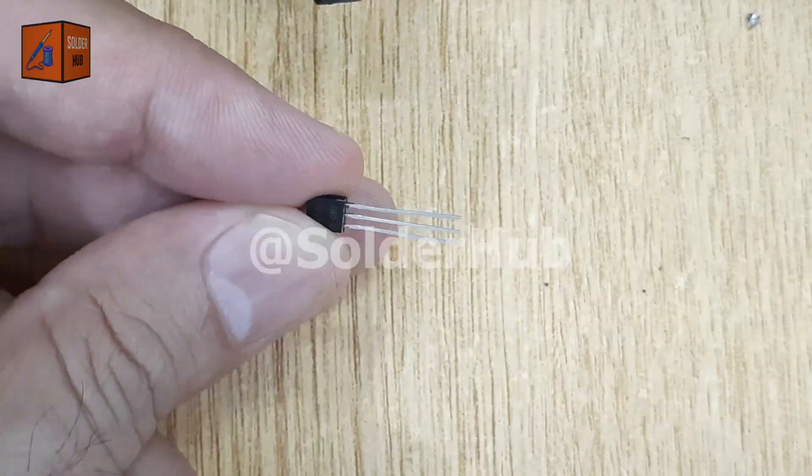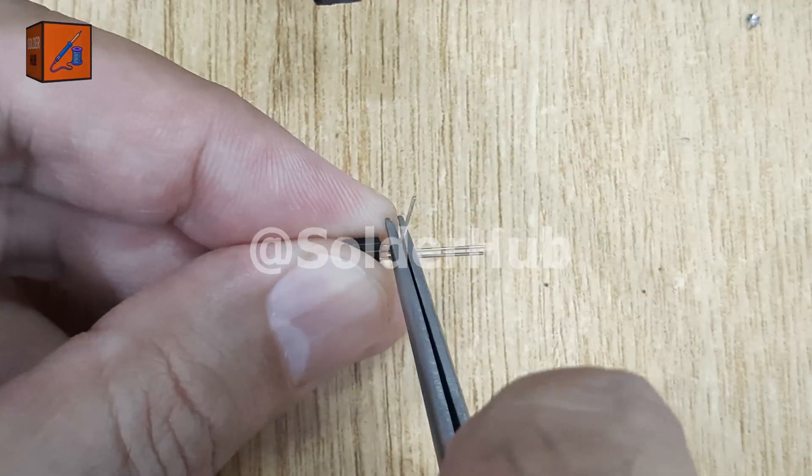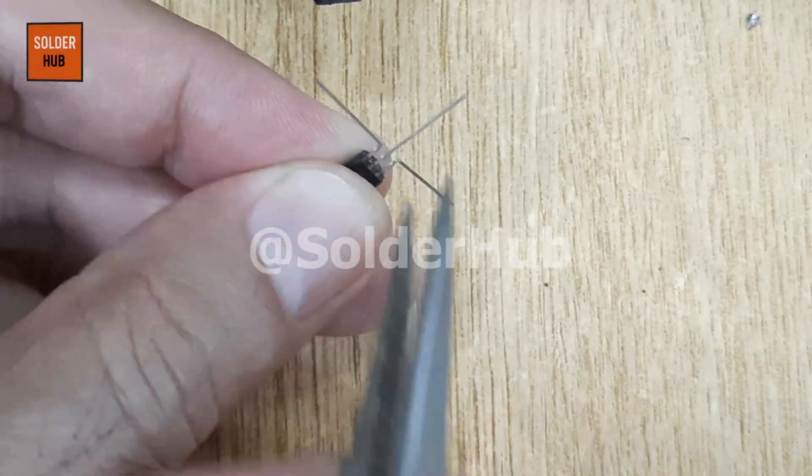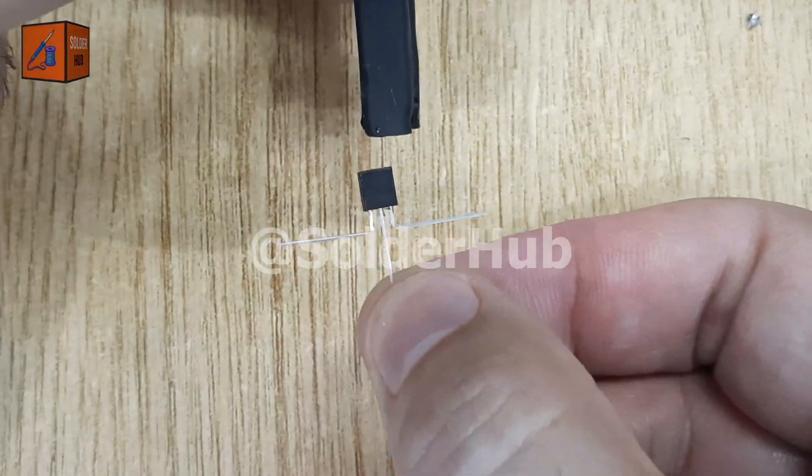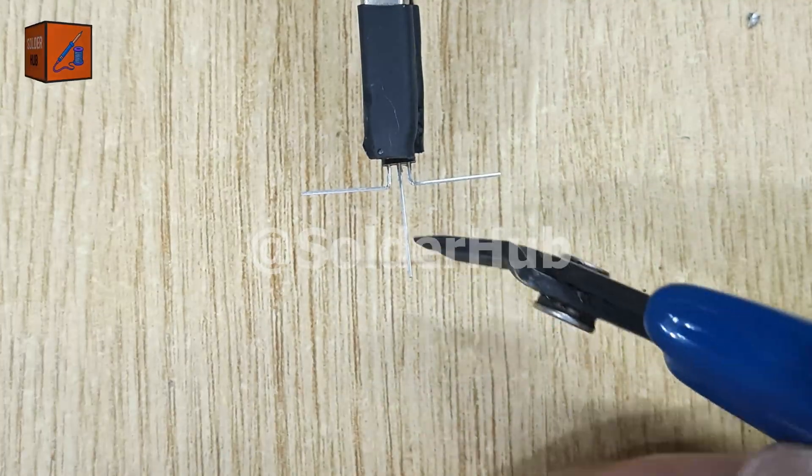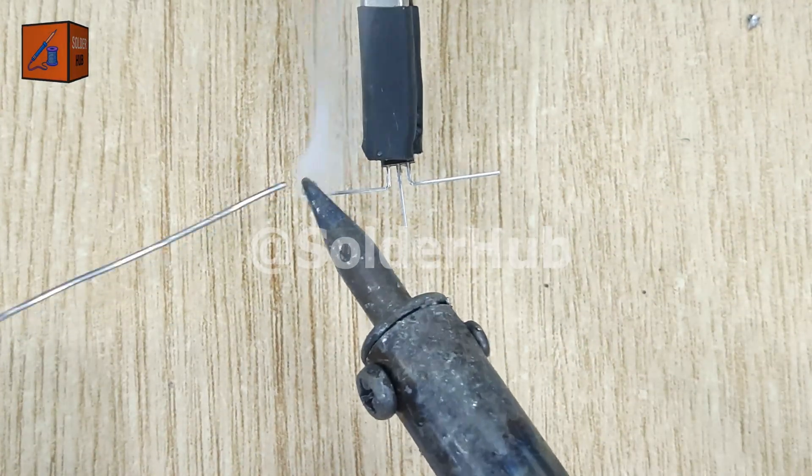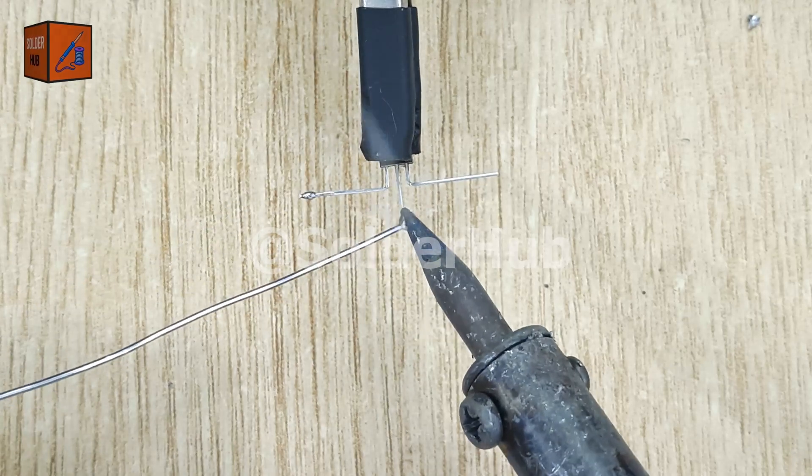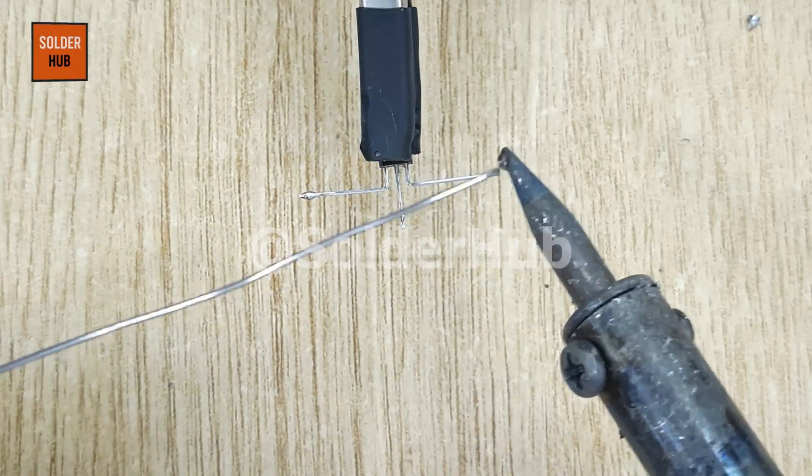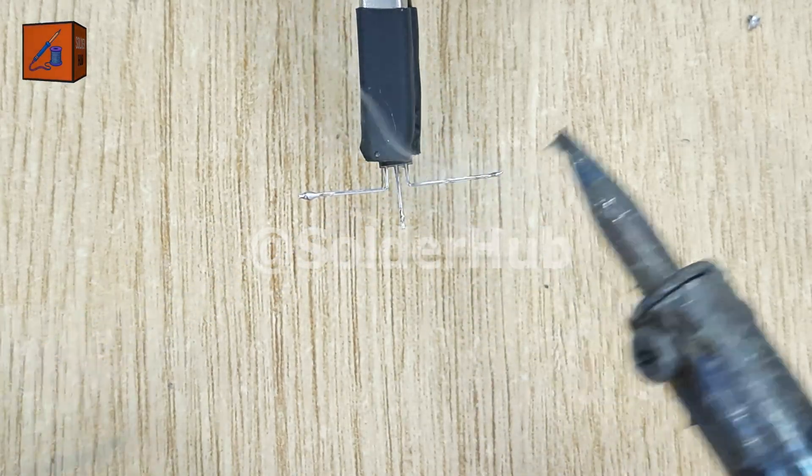The first electronic component I'll use is a BC547 transistor. I'll carefully bend its emitter and collector pins outward and trim the base pin slightly shorter to make soldering easier. After that, I'll apply a little solder on all three pins to prepare them for strong connections. This transistor will act as the switching brain of our circuit.